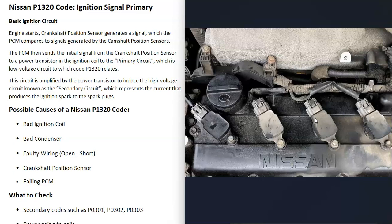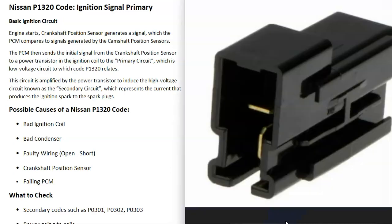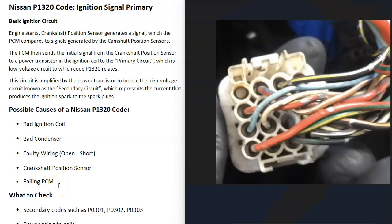One possible cause is a bad ignition coil — one or more of these coils could have gone bad. There's also a small condenser inside the circuit, which is basically a capacitor. Its location will vary depending on the Nissan model and year, but if this condenser goes bad it can also cause problems.